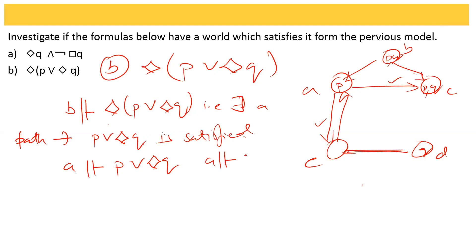A satisfied P is true and A diamond Q is also true as C, the language of C has Q. Hence B diamond (P or diamond Q) holds.